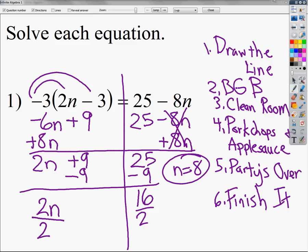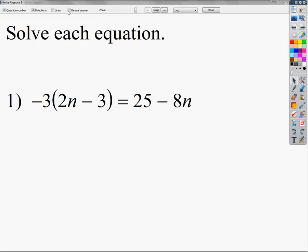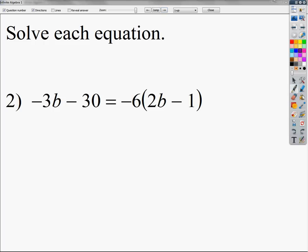That's kind of the system. Let's look at a few more, see if we can get a bit of a different answer. By the way, you can check to see if these are right. There it is, see? That was right. I'm not just making it up. The next one is here. Negative 3b minus 30 is equal to negative 6 times the quantity 2b minus 1. Follow the steps. Draw your line. Baby goes bathroom.